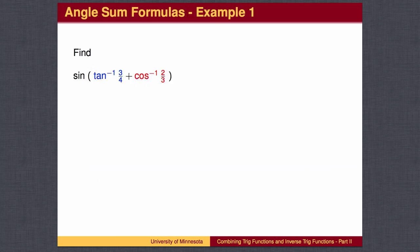Here is a typical problem. Find the sine of the inverse tangent of 3/4 plus the inverse cosine of 2/3. In order to do this problem, we first need to understand what the various parts represent.